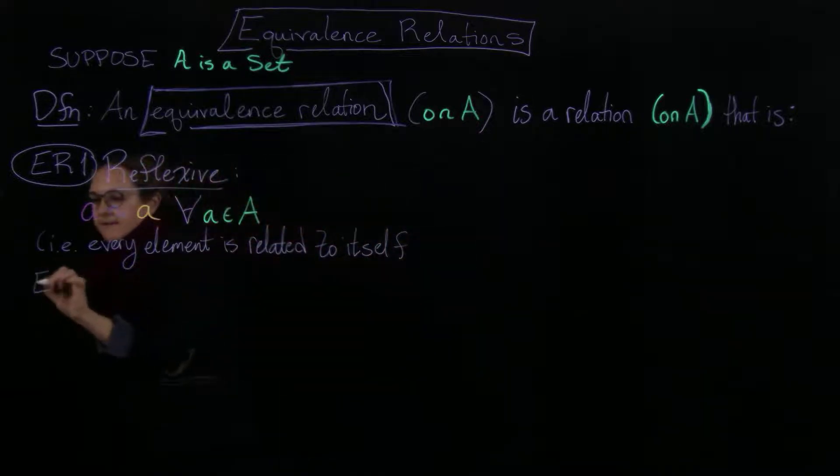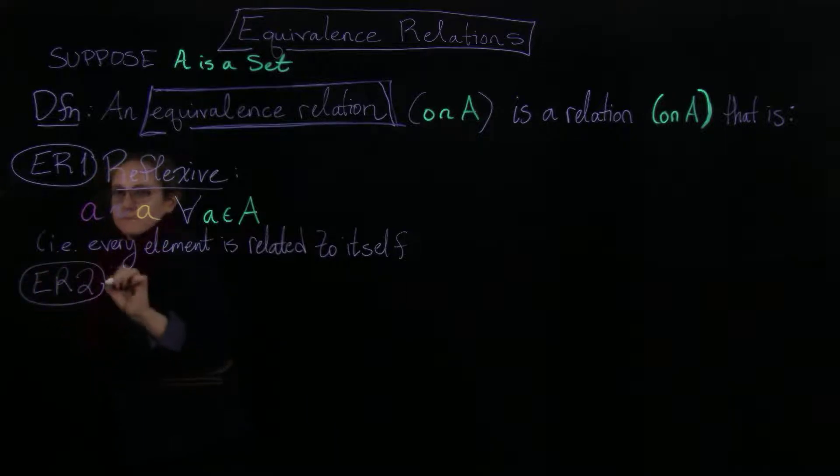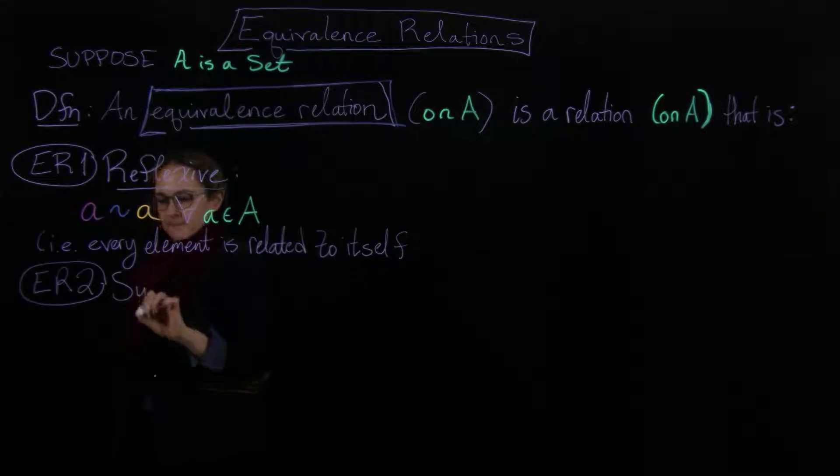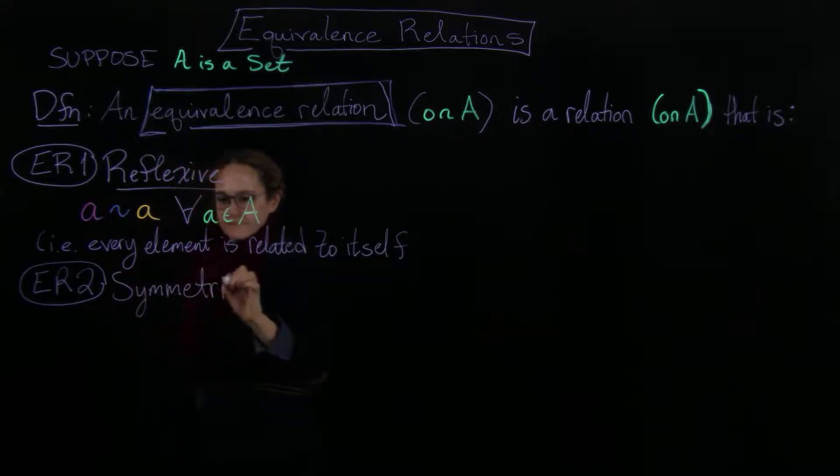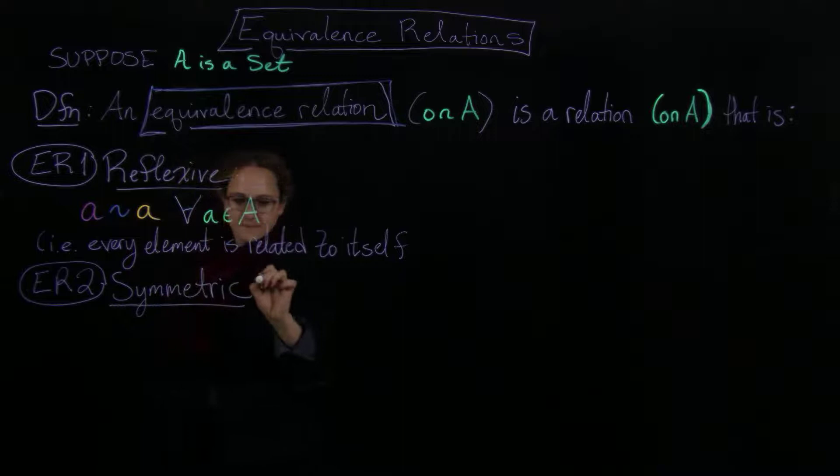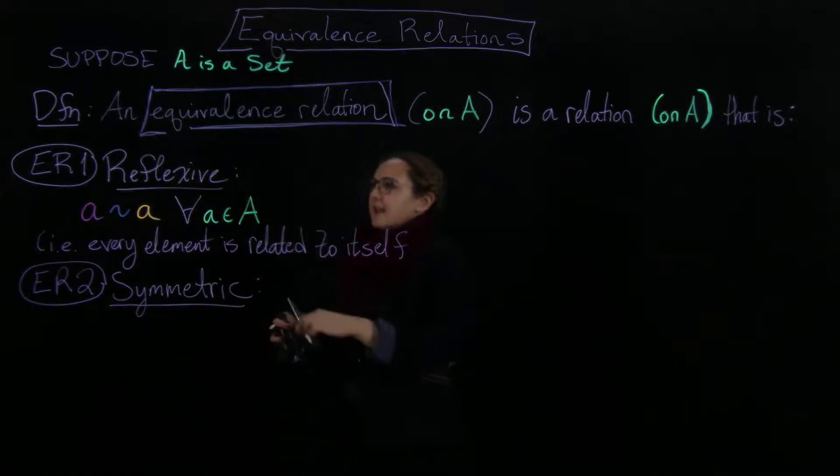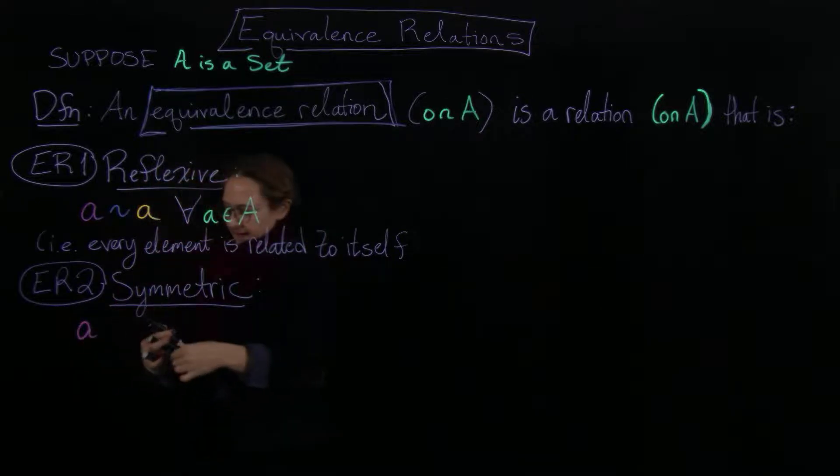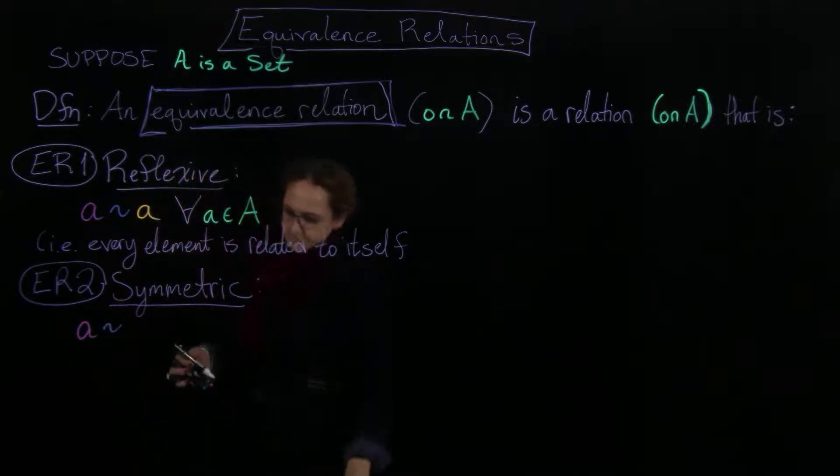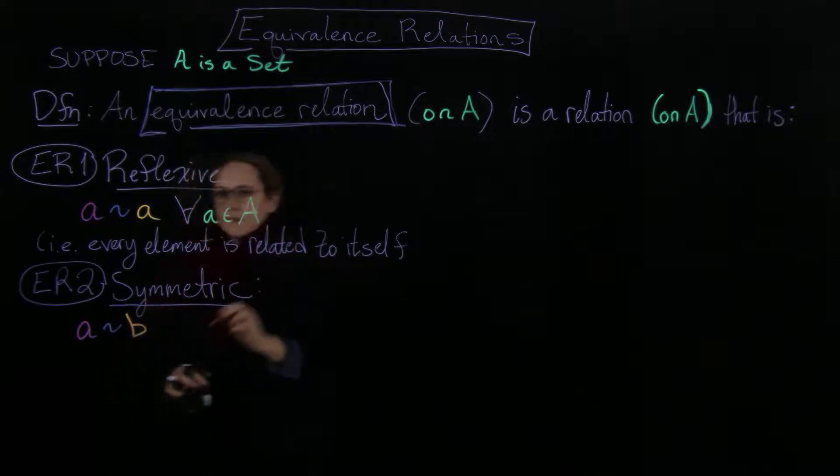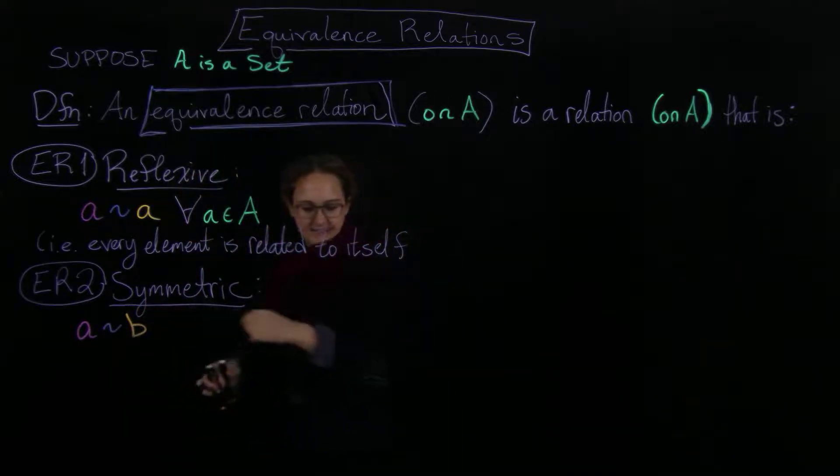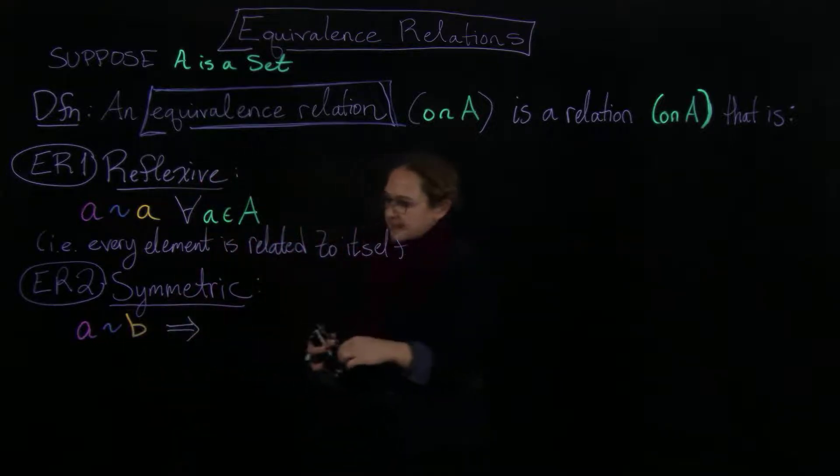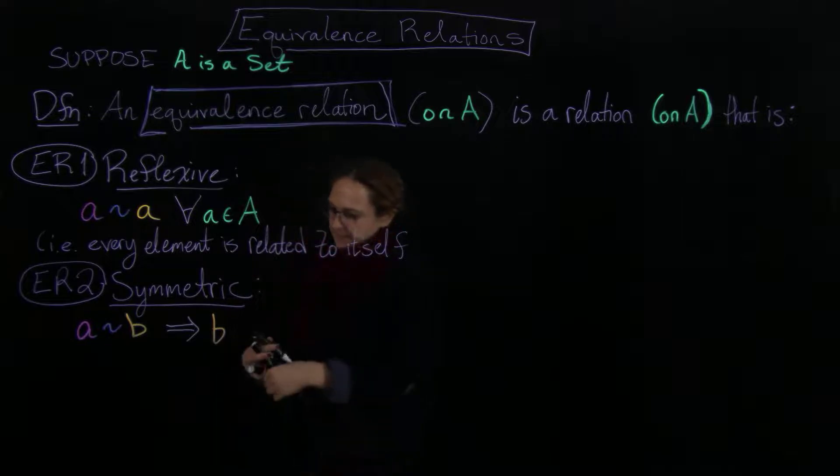And then we have the second, which is that it has to be symmetric. Okay, which is that when you have A is related to B, then you also have, so this is going to imply, so anytime you have that A is related to B, you have that B is then related to A.